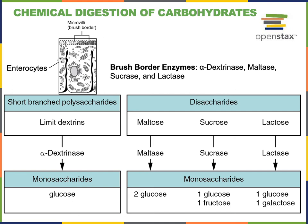Alpha dextrinase is the brush border enzyme that catalyzes hydrolysis of limit dextrins to produce glucose. Maltase is the brush border enzyme that catalyzes hydrolysis of maltose to produce two glucose molecules from every maltose. Sucrase is the brush border enzyme that catalyzes hydrolysis of sucrose producing one molecule of glucose and one molecule of fructose. And lactase is the brush border enzyme that catalyzes the hydrolysis of lactose producing one glucose molecule and one galactose molecule.